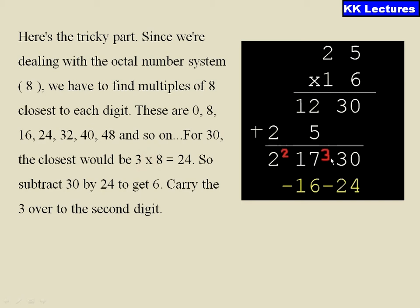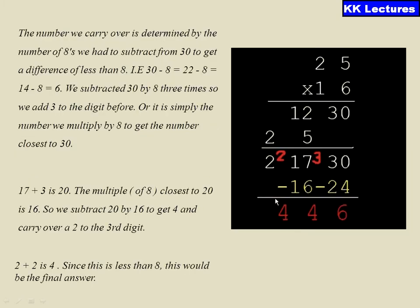As it is going 3 times, give a carry of 3 and subtract 24 from 30. Similarly, the 17 plus 3 is 20. The number which is very close to 20 is 16. 16 subtract 16 from this 20 and give a carry of 2. Why you are giving a carry of 2 means 8 times 2 is 16. So as we are subtracting 24 and 16, 30 minus 24 is 6, 20 minus 16 is 4, and the remaining 4 will be written as it is.